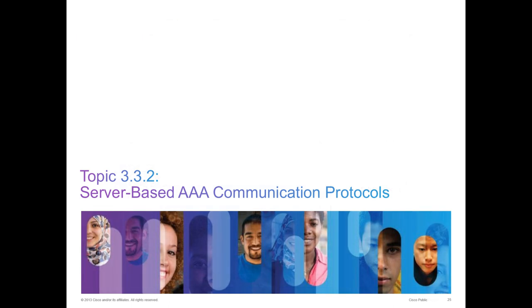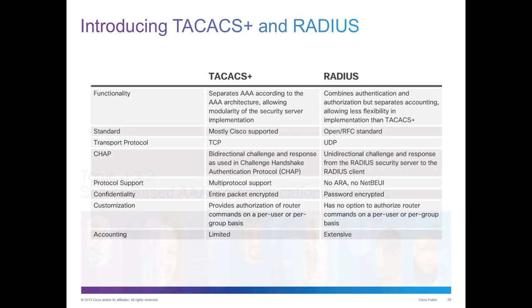Server-based AAA communication protocols — a clever way of saying TACACS versus RADIUS. Functionality: RADIUS will combine authentication and authorization but separate accounting. TACACS will separate all three AAA components according to the AAA architecture, allowing modularity of the security services. Who uses which protocol? TACACS is predominantly Cisco. RADIUS is pretty much everything else. If you are trying to connect through a directory service that's not Cisco, you're using RADIUS.